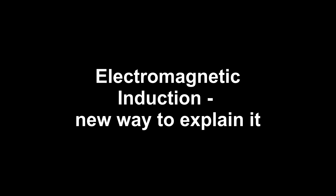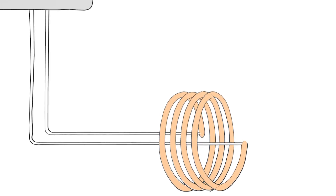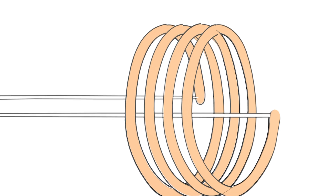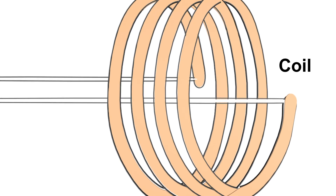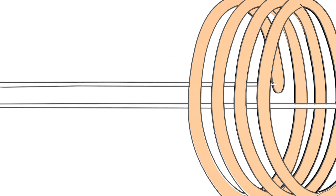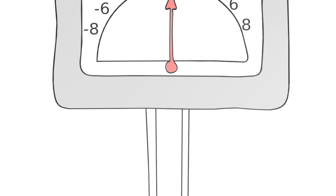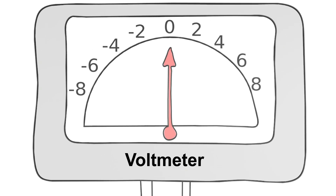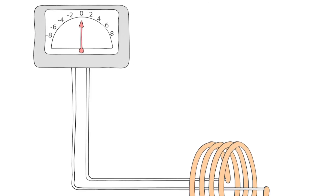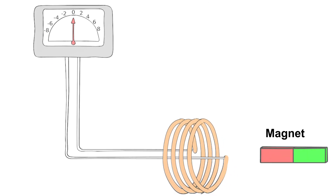Hi everyone, in this video I want to explain electromagnetic induction. For this experiment we only need one coil which is connected to a voltmeter with power cables. We also need a bar magnet.